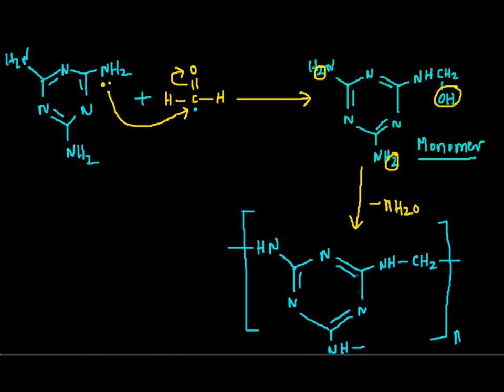Now melamine formaldehyde polymer is a co-polymer, since it is made up of two different monomeric units. First monomeric unit is melamine and the second one is formaldehyde. At the same time it is a condensation polymer.